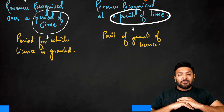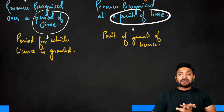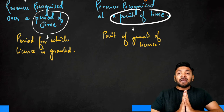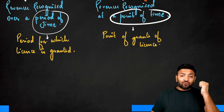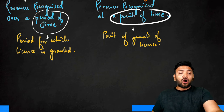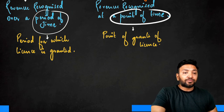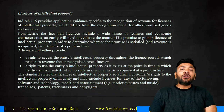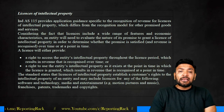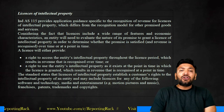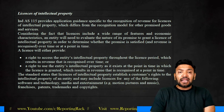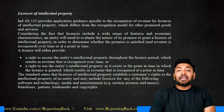To summarize: licenses of intellectual property are divided into two types. First, the right to access intellectual property throughout the license period, which results in revenue recognized over a period of time. Second, the right to use intellectual property as it exists at the point at which the license is granted, which results in revenue recognized at a point of time.